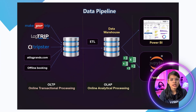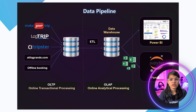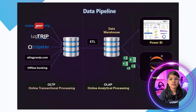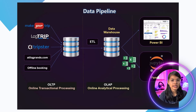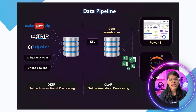Now let's understand the data pipeline. In this picture you can see that the booking data is coming from different sources — MakeYourTrip, BookTrip, ClickGrant.com (the official website of AtliQ Grand), and even offline bookings. This data from different sources is stored in a system called OLTP (Online Transaction Processing). After that, we use ETL — we take the data, clean it, and store it into a big storage called a data warehouse.